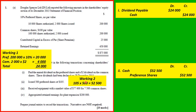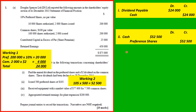So your journal entry would be: debit cash $52,500 and credit preference shares $52,500. The next transaction: we receive equipment with a market value of $72,600 for 7,500 common shares.